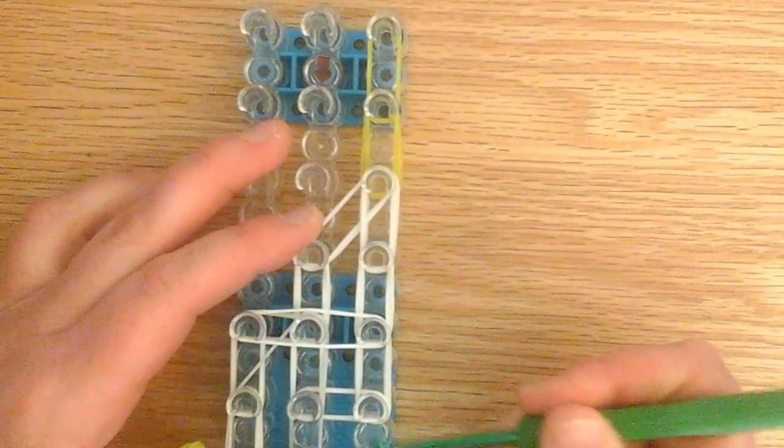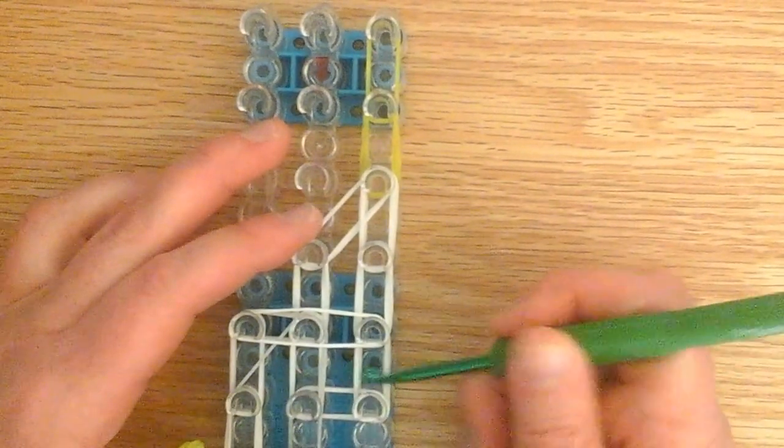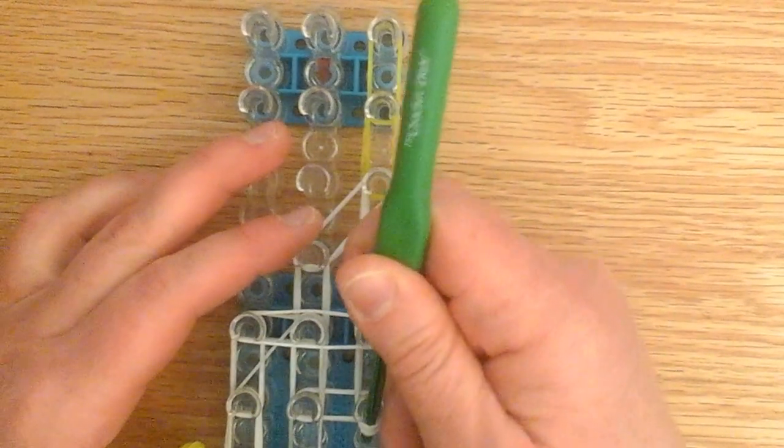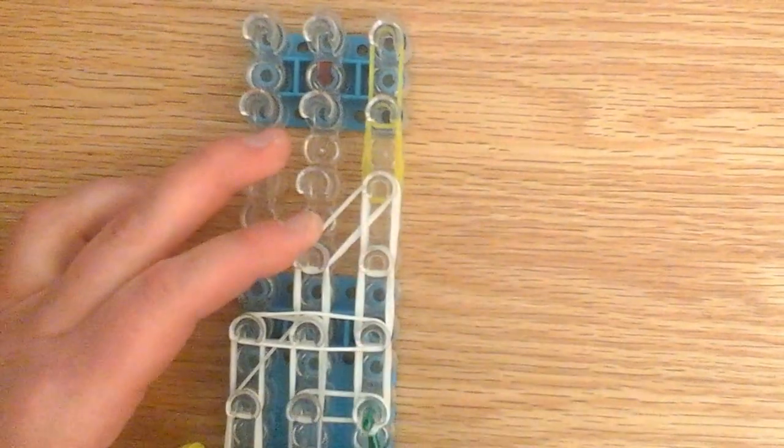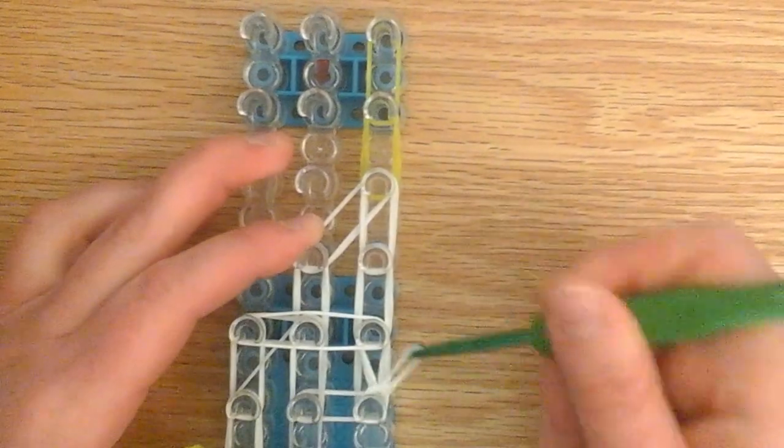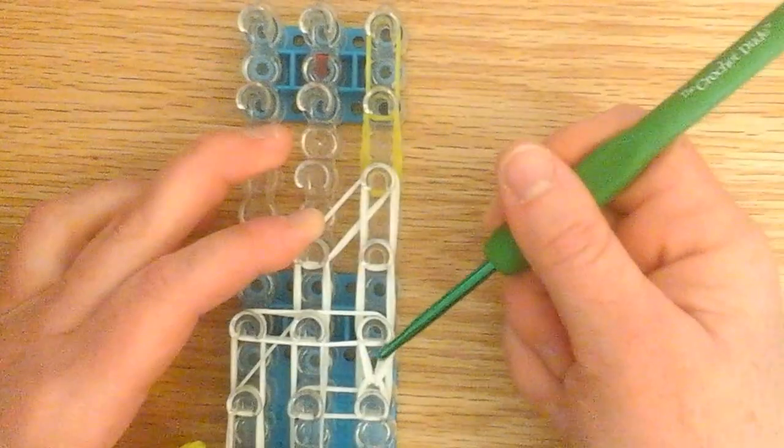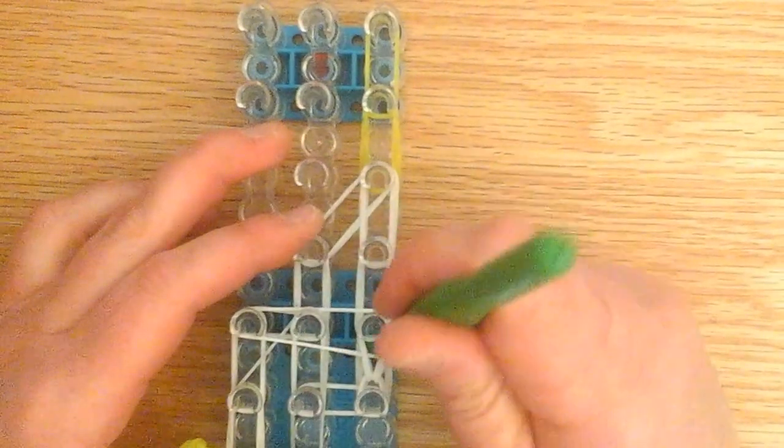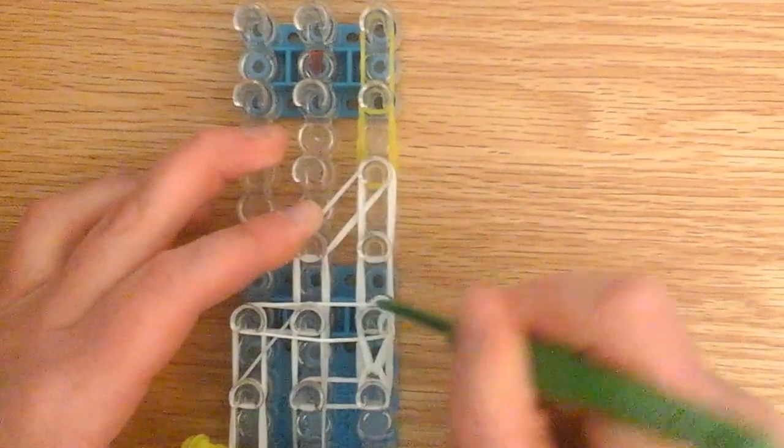So we can start looping the head area, the first structural band. So here's your capping. Take this band, which would be the top two.